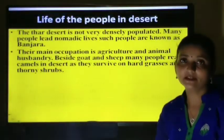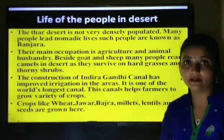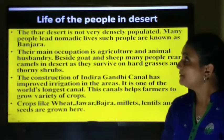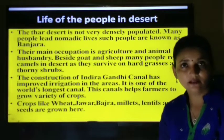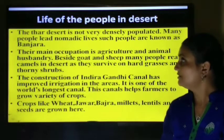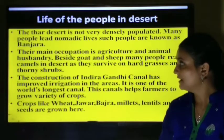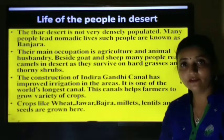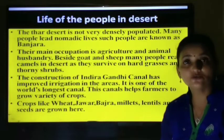Life of the people in the desert is very hard due to the hot and dry climate with less rainfall. The desert is not very densely populated — very few people live there compared to other states. Some people lead nomadic lives, meaning they never settle at one place but move from one place to another in search of food. They are called banjaras. Their main occupation is agriculture and animal husbandry. Many people rear camels, as they survive on hard grasses and thorny shrubs. The construction of the Indira Gandhi Canal has improved irrigation in this area.